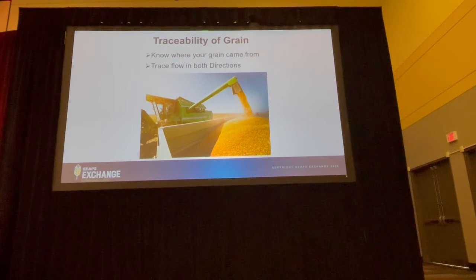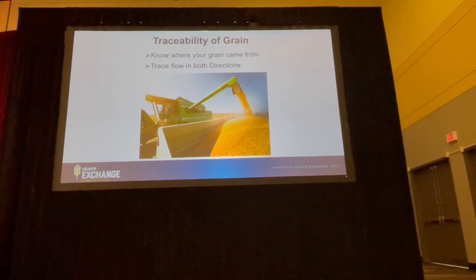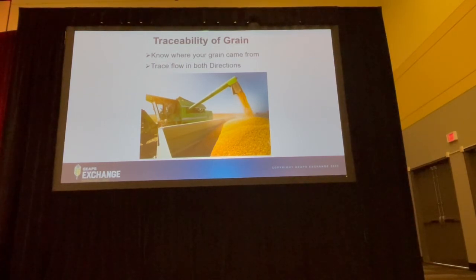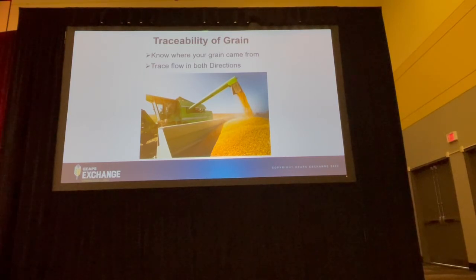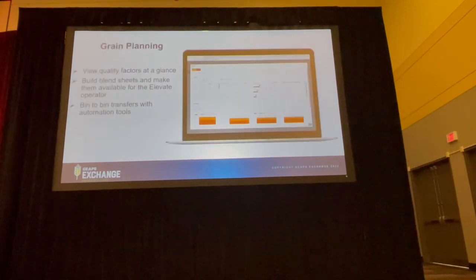Traceability: we use an algorithm to trace grain based on where it comes in. You can see all the bins that that grain flowed to. Ultimately, if it ended up on a rail car, you can also do the reverse — tracing from the rail car back to the farmers and the fields that the grain came from.